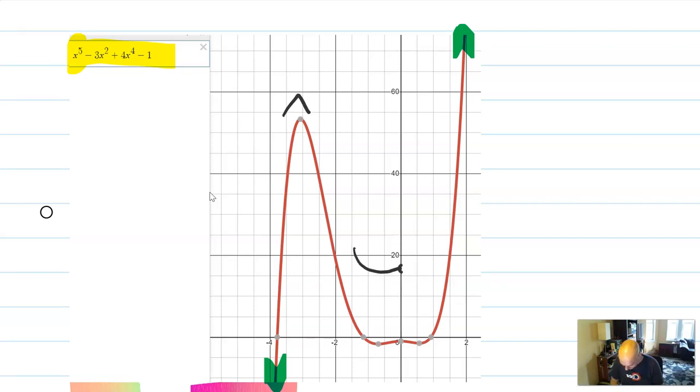And it's not going to have any sharp corners. It's not going to have any breaks. It's not going to have any vertical asymptote behavior where it takes a, you know, takes a pause and then comes back some other way. None of that is going to happen with a polynomial.